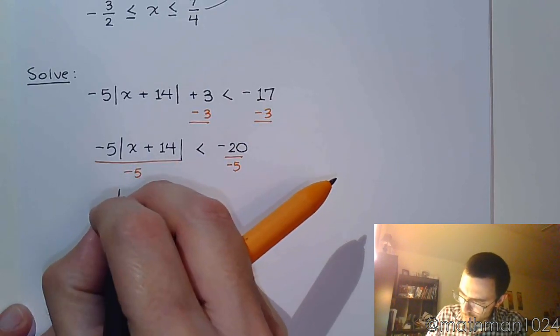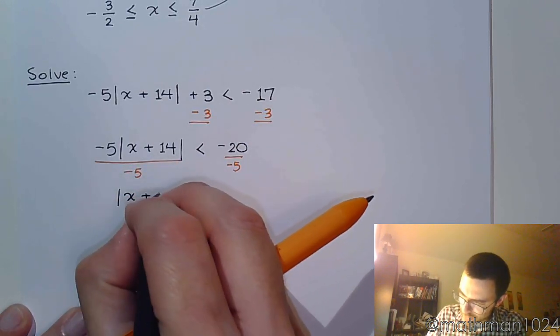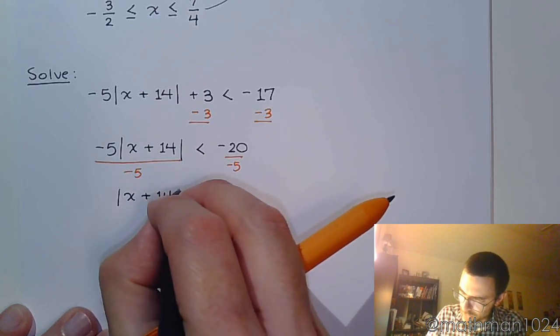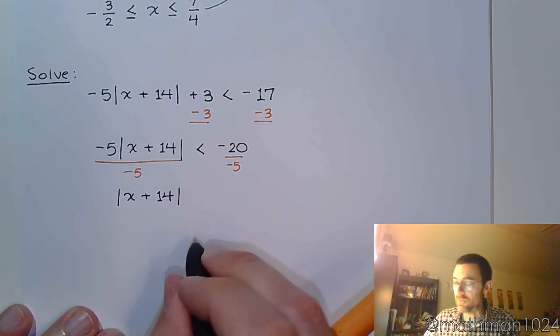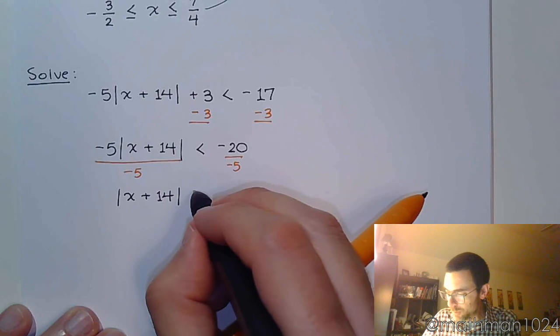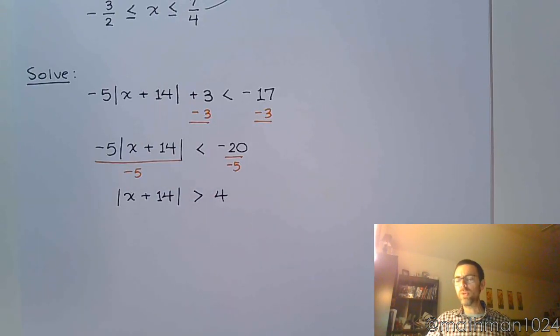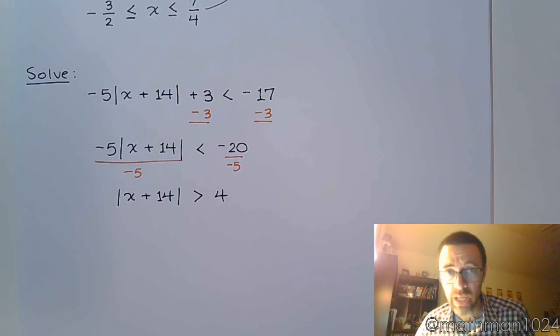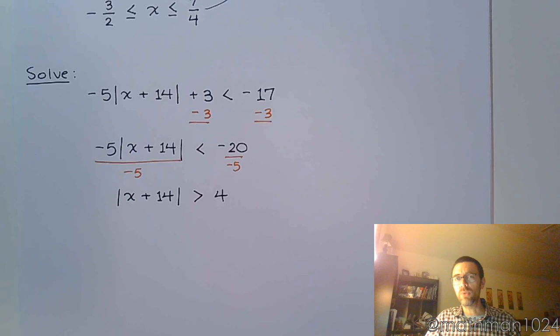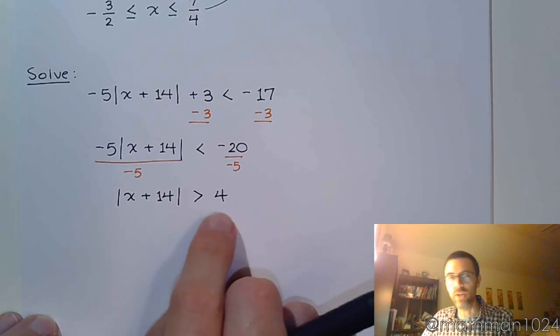Now, I hope that you are all paying attention to what just happened. I just divided both sides of an inequality by a negative, which means this inequality flips to become greater than. Remember that if you multiply or divide both sides of an inequality by a negative, the inequality symbol is going to flip. So now we have the absolute value being greater than 4.